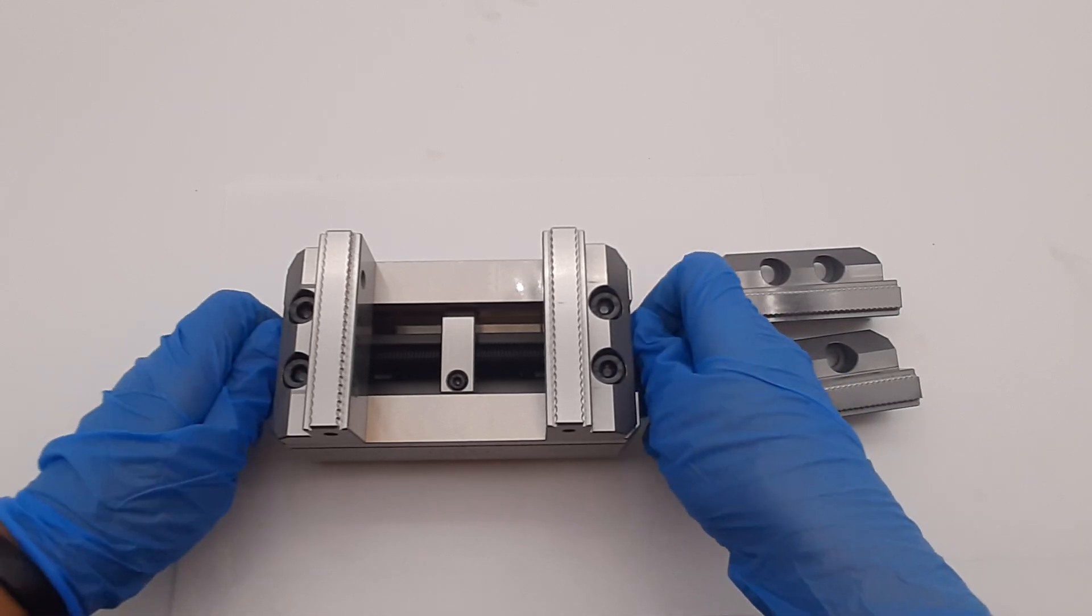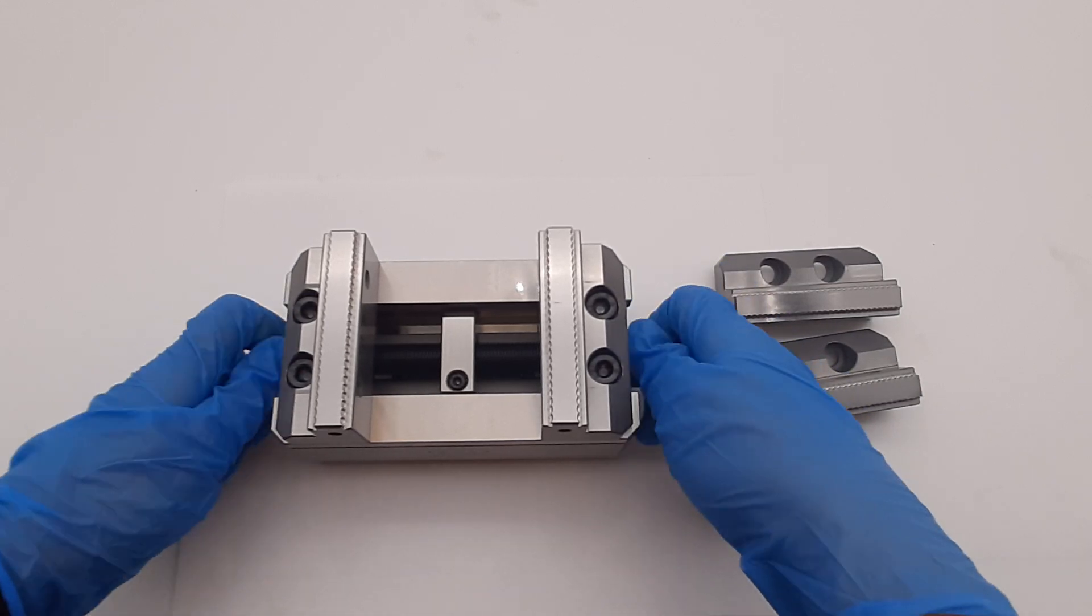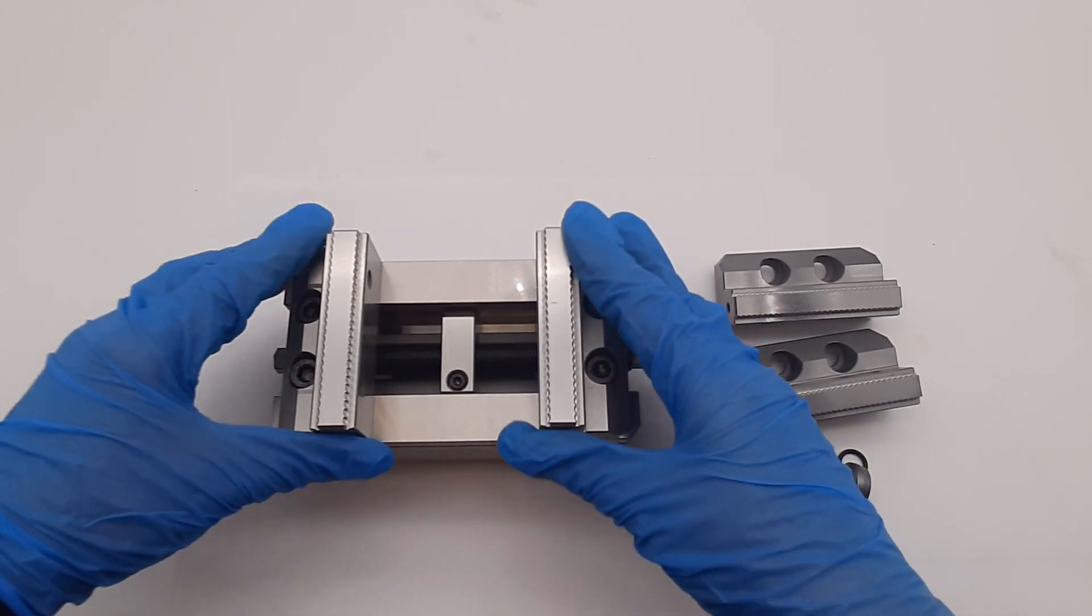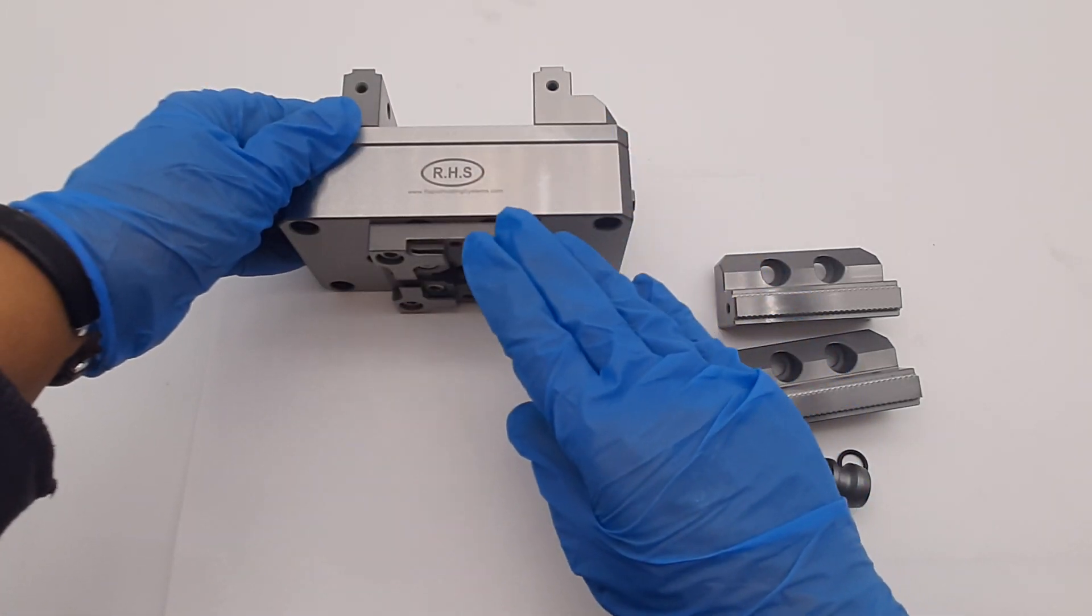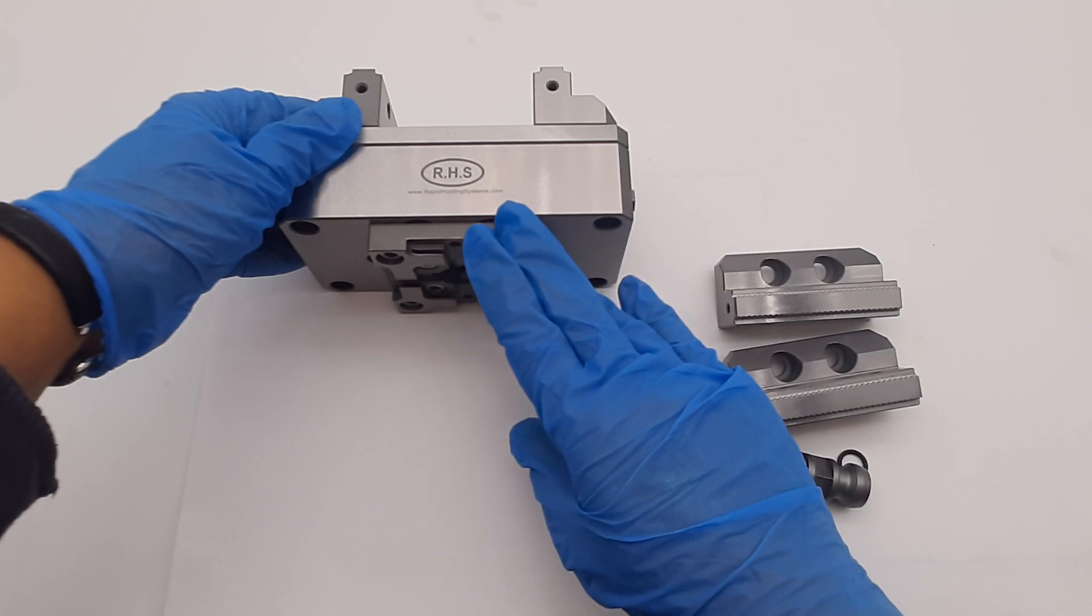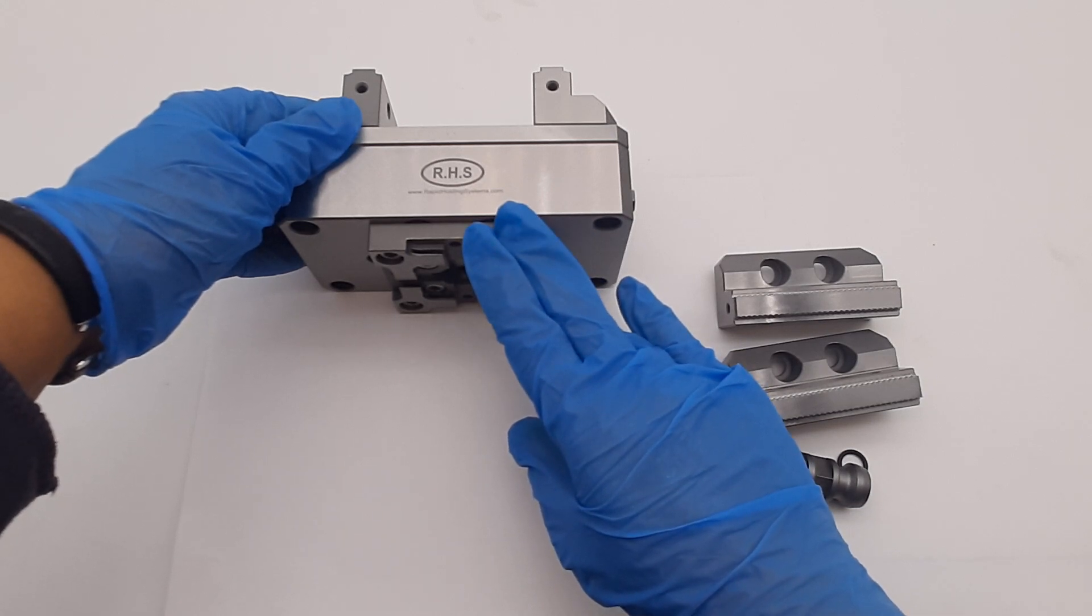We make these kinds of vises in three types of versions. One with the System 3R compatible plates, we mount the vise on 54mm macro palette, 70mm macro palette, and also on the macro magnum palettes.